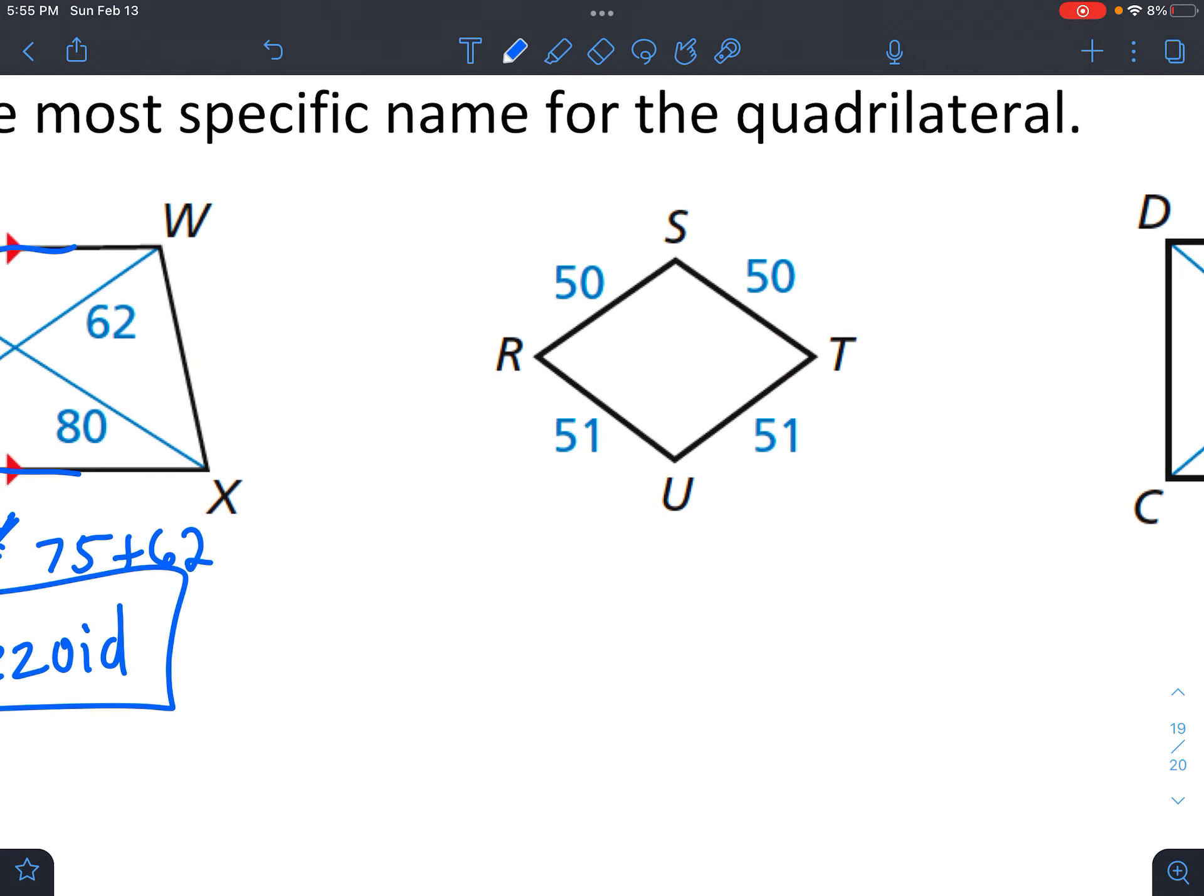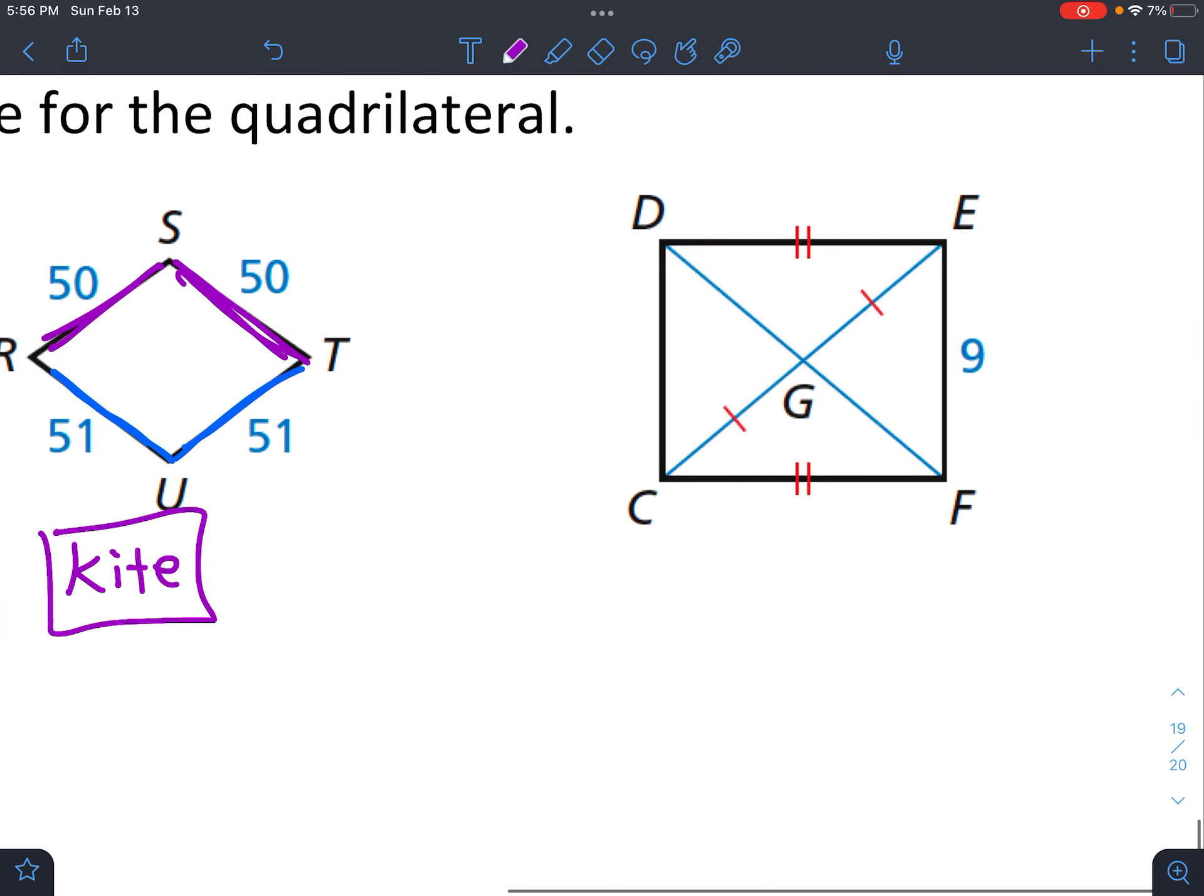And then this one. It looks like we have two sides that equal each other and then two separate sides that equal each other. Even though it kind of looks like a square, it's actually a kite. Because if two sides equal each other and then the two cross equal each other, then it's always a kite.